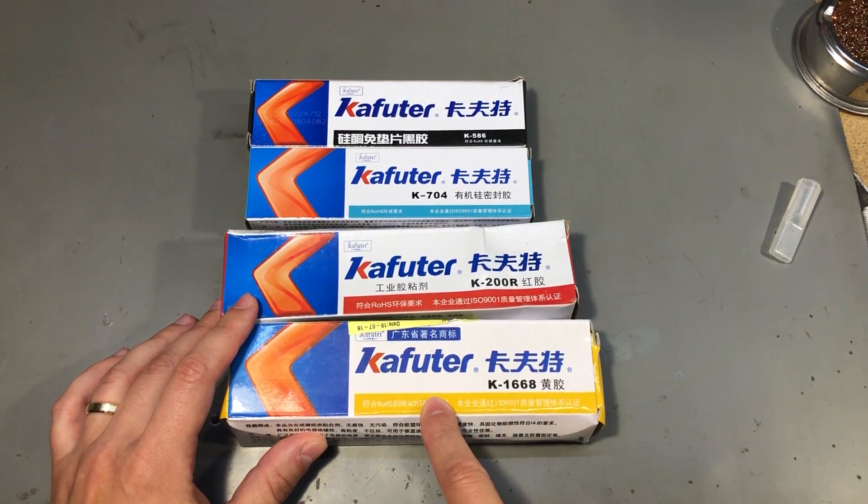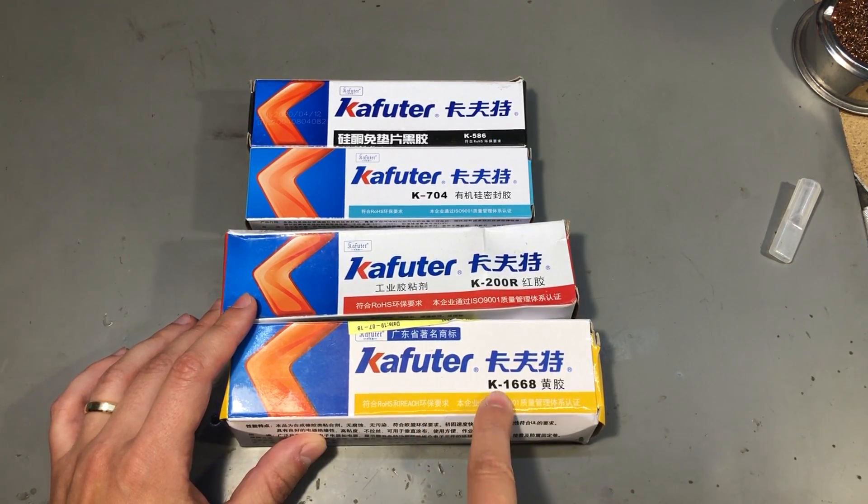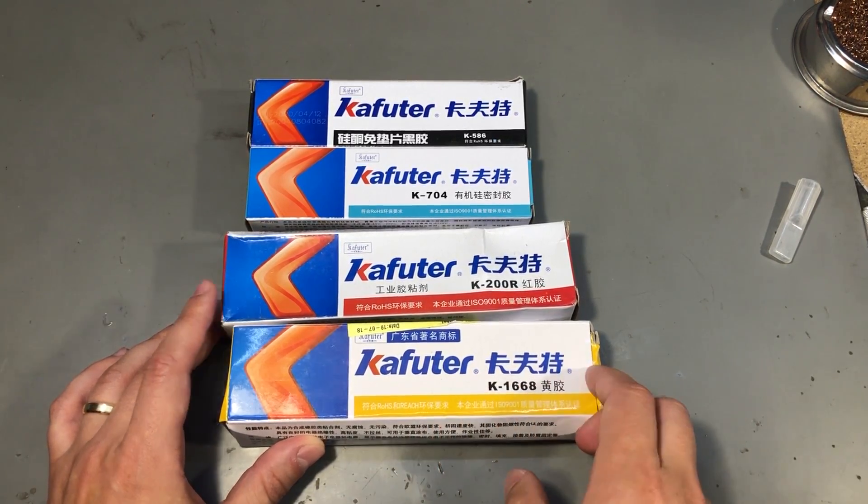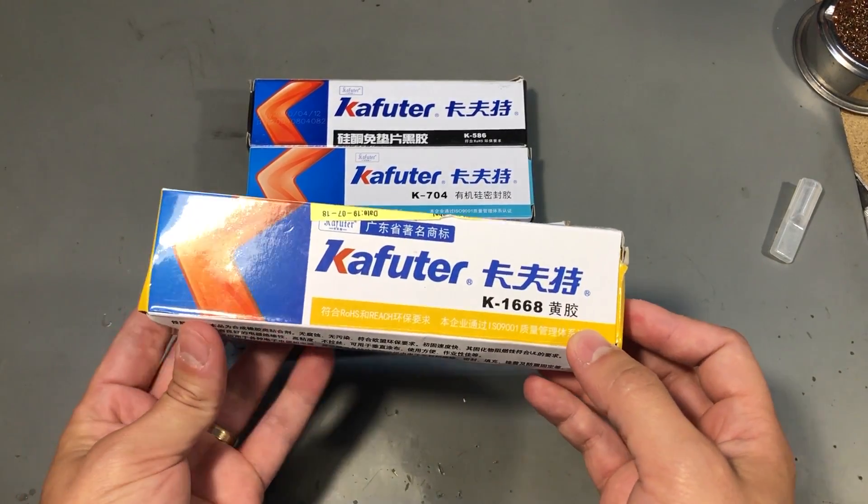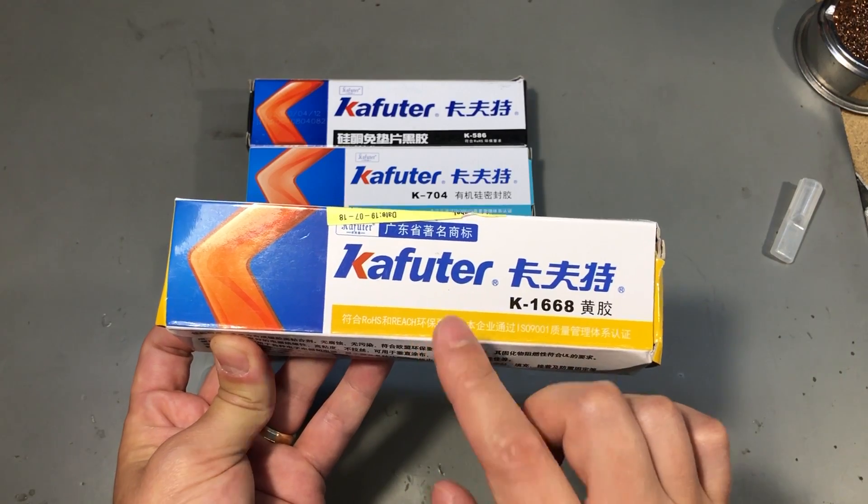So I have the K1668 or the so-called yellow glue and this is rated for electronics use by the manufacturer. They claim fast curing time, electrical insulation, no corrosion and flame retardant after it's cured.